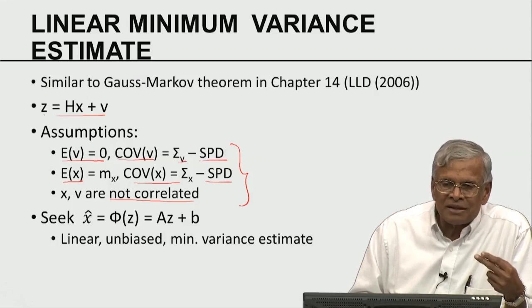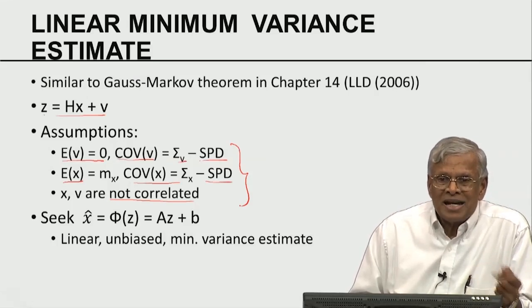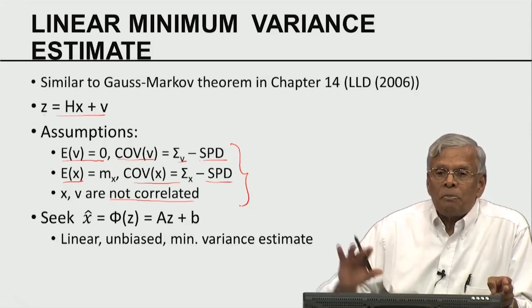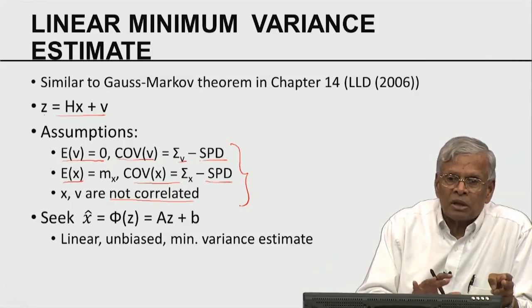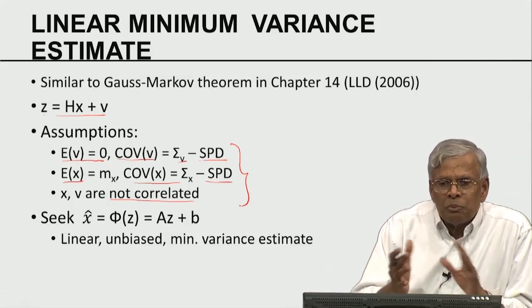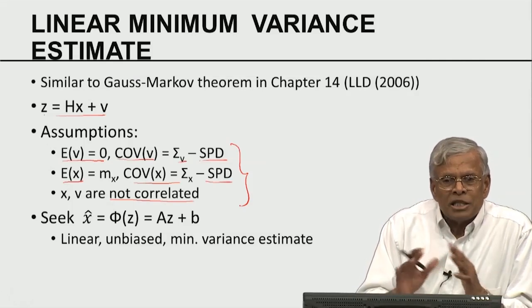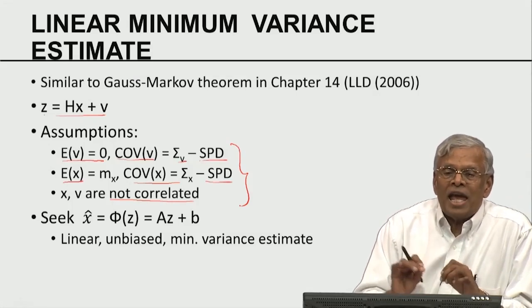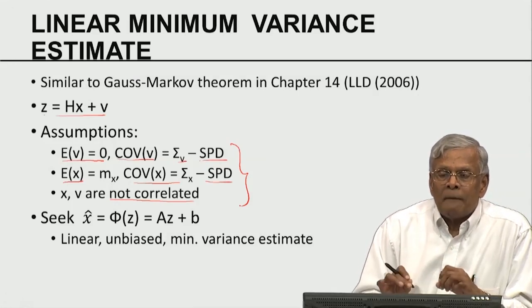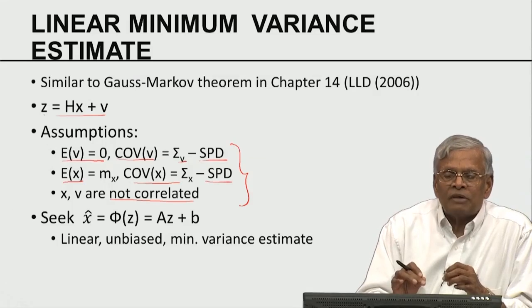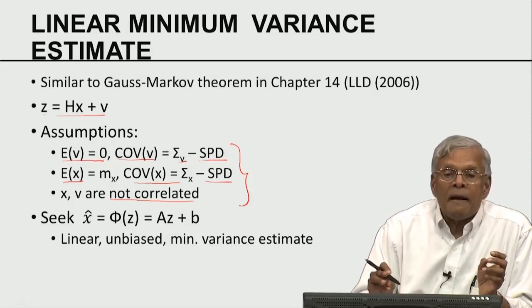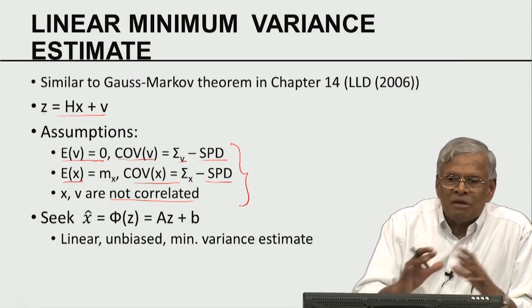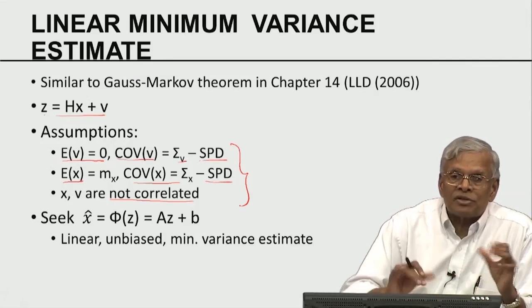There is a Bayesian undercurrent here: x is random, x has a prior, z is the observation. The prior gives some information and the observation gives some other information — we have two pieces of information. Whenever you have two pieces of information, we would like to combine them optimally. Now we are going to look at another way of doing Bayesian-like estimation, but within the framework of linearity, unbiasedness, and minimum variance. That is the theme of this first part of this discussion.